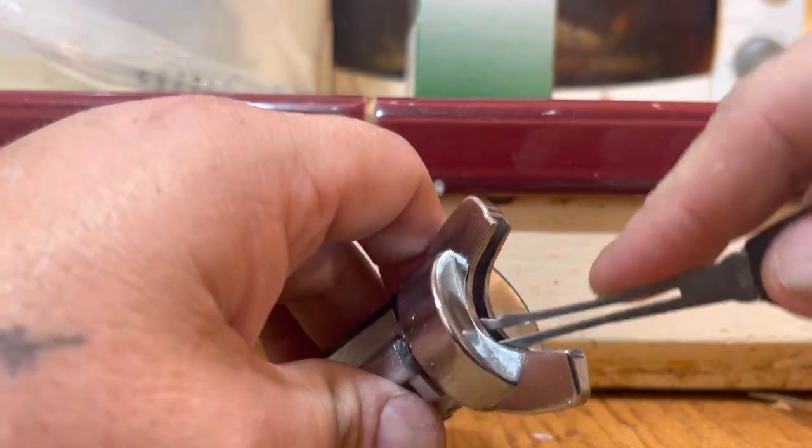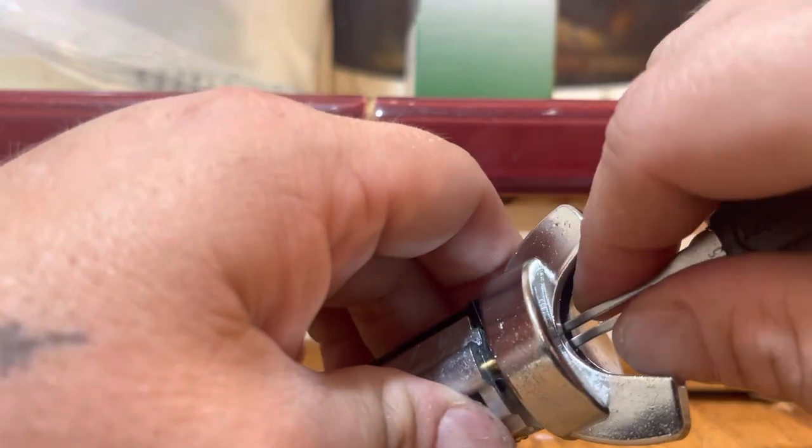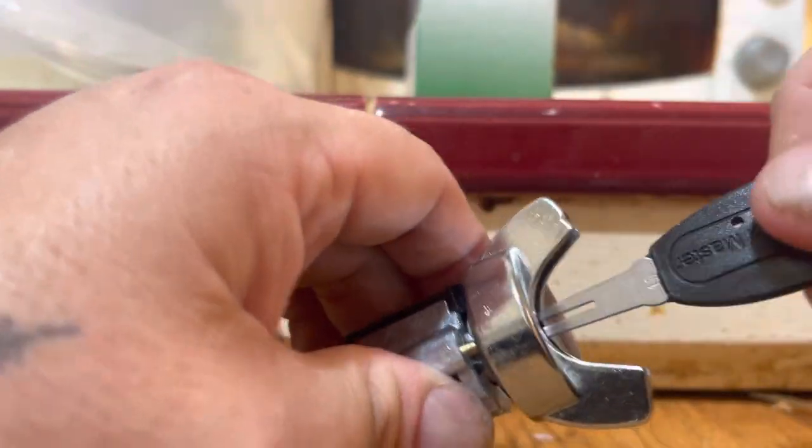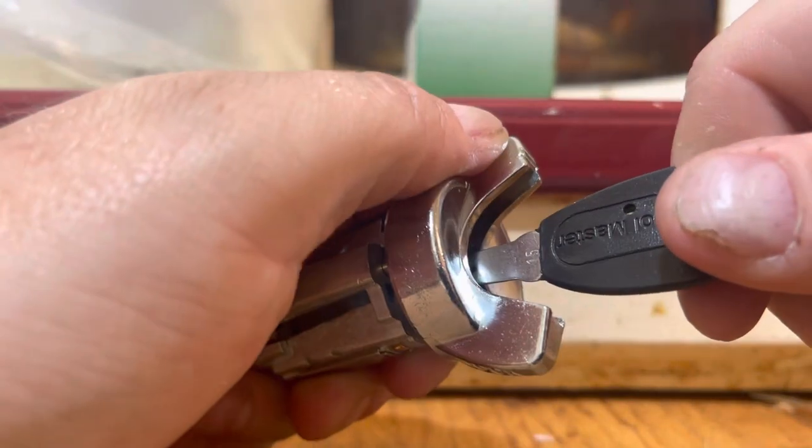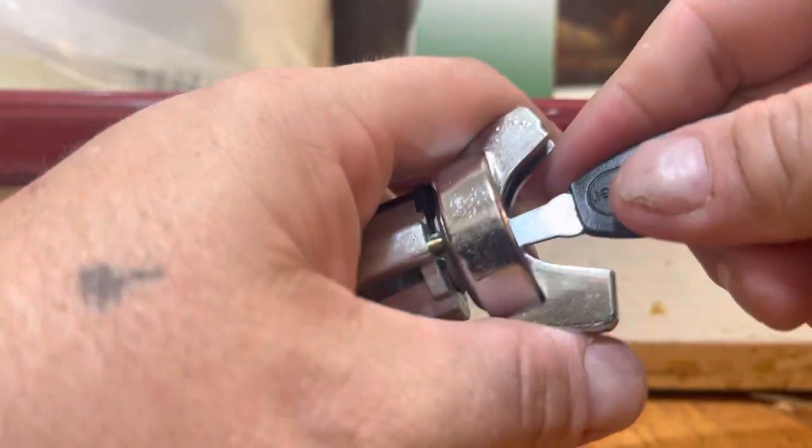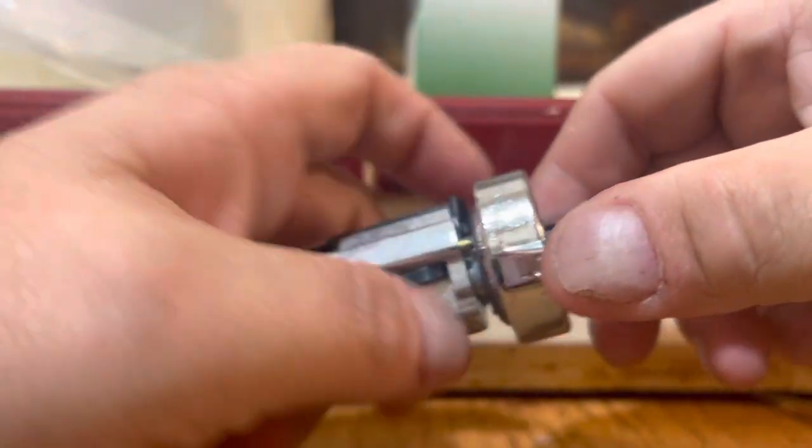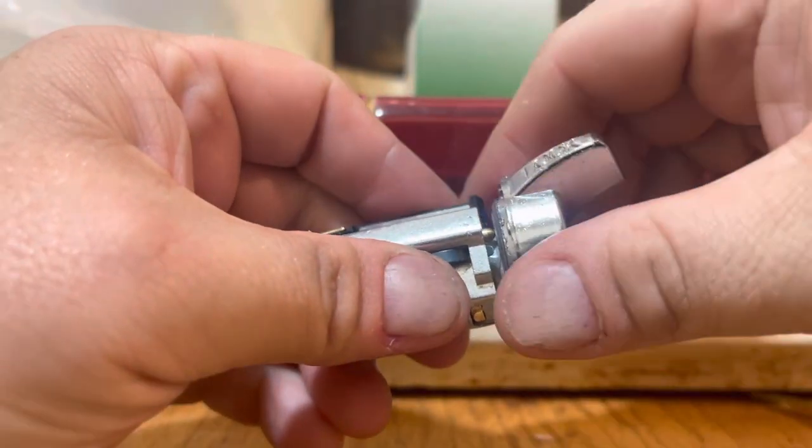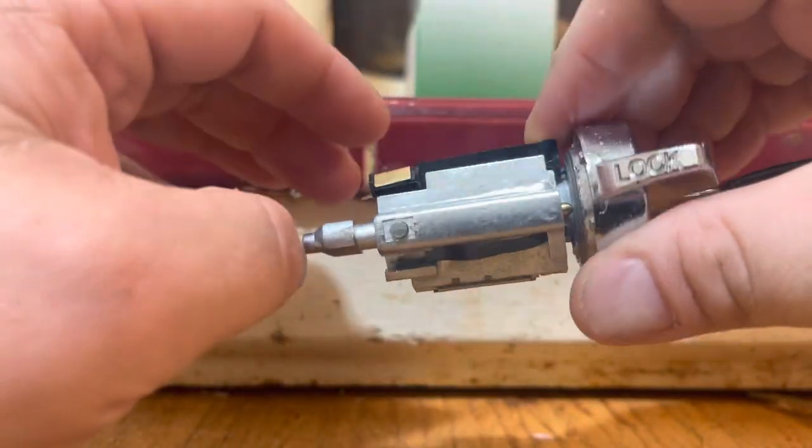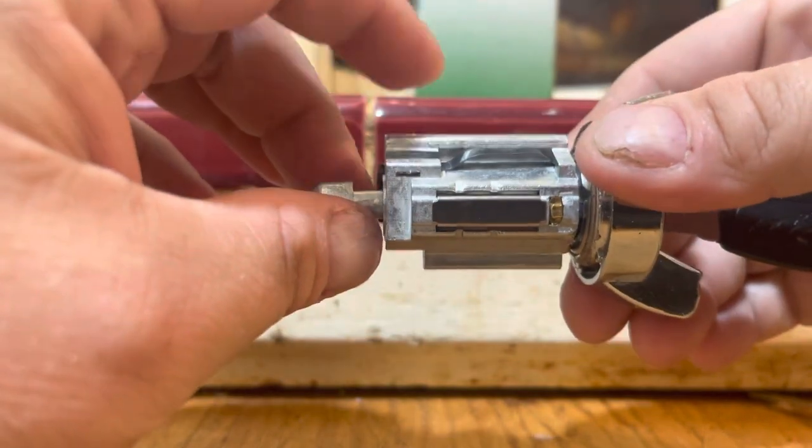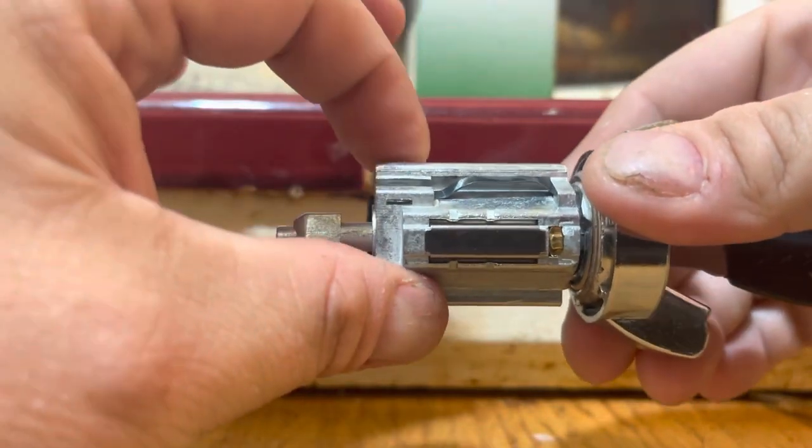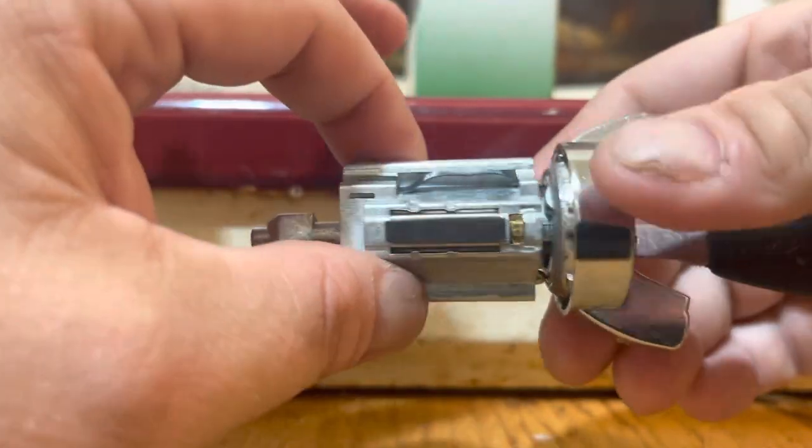So if we just insert this pick in, and we put a little tension, and just kind of rake it back and forth, you'll see that we can drop that pin and remove the cylinder.